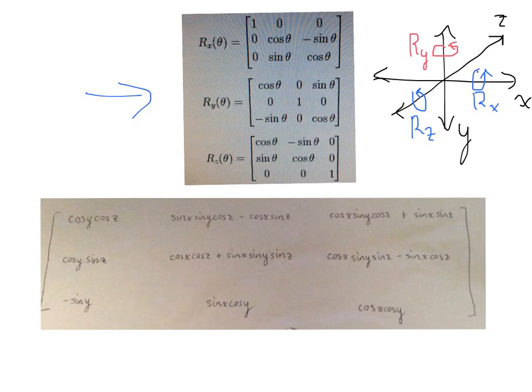Okay. So, theta for each one will rotate it around that axis, theta degrees, or radians. Now, this image on the bottom, this one right here, this matrix describes three rotations: one around the x-axis, one around the y-axis, and one around the z-axis.